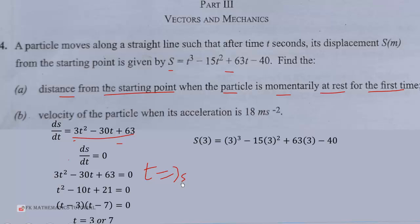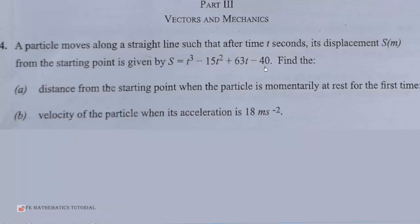So, we substitute t equal to 3 into this to obtain 41 meters. Then, the b part says the velocity of the particle when its acceleration is 18 meters per second squared. So, we have to find the acceleration by differentiating the velocity.